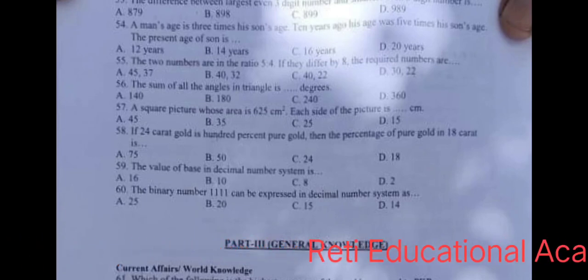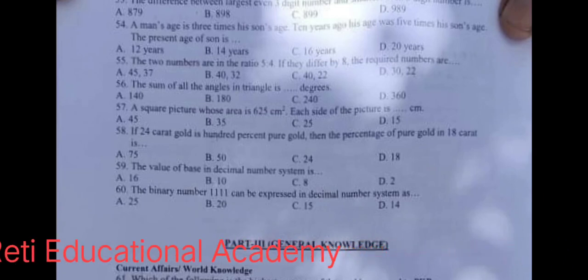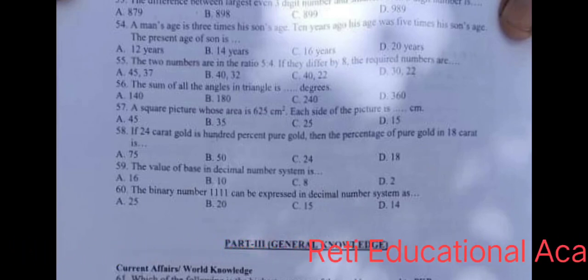Question number 59: The value of base in decimal number system is, and the correct answer is B, 10. Decimal number means 10.